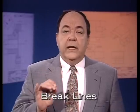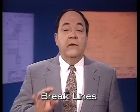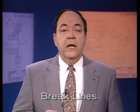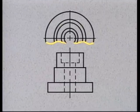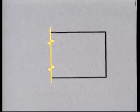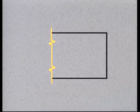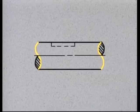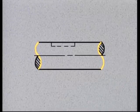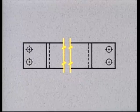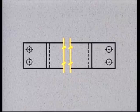Another drafting convention concerns the use of break lines. A break line indicates where a view is broken off. There are different styles of break lines to represent different types of breaks: a wavy break line is used for a short break, and a jagged break line is used for a long break. Another style is used for breaks in rods and tubes. Break lines are also used to indicate that a portion of a long, uniform part has been removed, sometimes done to save space on the drawing.